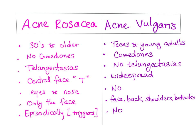Let's recap. Acne rosacea affects people in their 30s and older; acne vulgaris affects teenagers and young adults. Acne rosacea has no comedones; acne vulgaris has comedones — whitehead or blackhead. Acne rosacea has telangiectasias and flushing; no telangiectasias in acne vulgaris. Acne rosacea distribution is central face, T-distribution; acne vulgaris is widespread. Acne rosacea can have complications to the eyes — conjunctivitis — and nose — rhinophyma — no such thing in acne vulgaris.